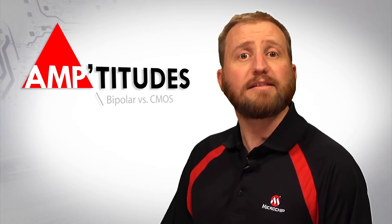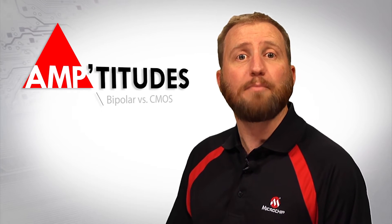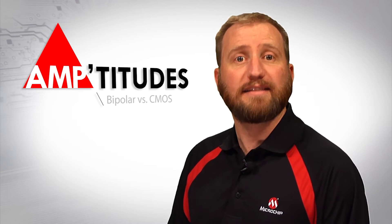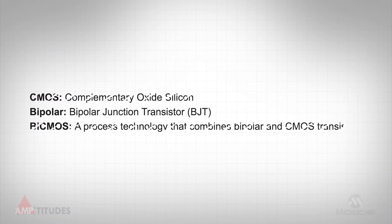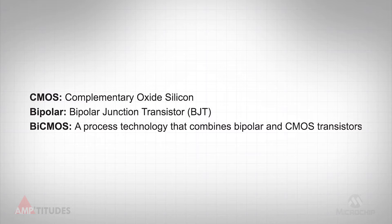One way is to start by selecting the proper process technology. Most manufacturers clearly label an op amp as CMOS, bipolar, or even Bi-CMOS. But what does this mean with regard to the actual use in an end application?